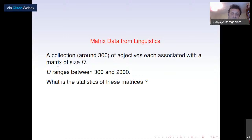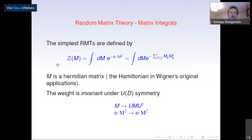The question is: what is the statistics of this collection of matrices? What is the nature of the randomness — is it Gaussianity, or is there some other kind of distribution at play? What are the symmetries controlling these matrices? Random matrix theory provides a natural set of ideas to approach these questions.